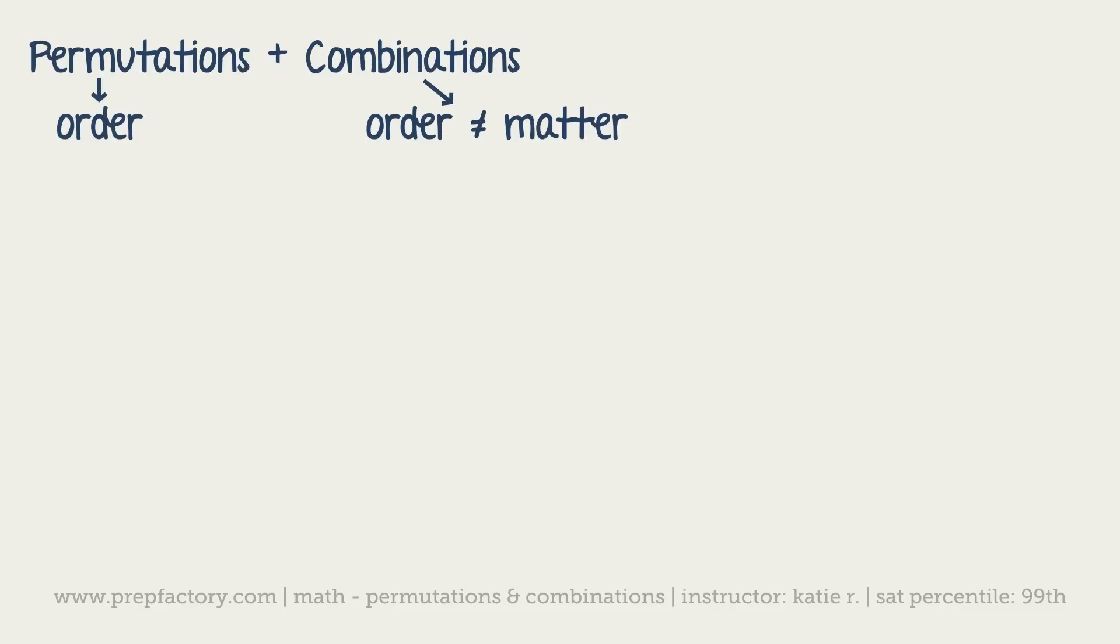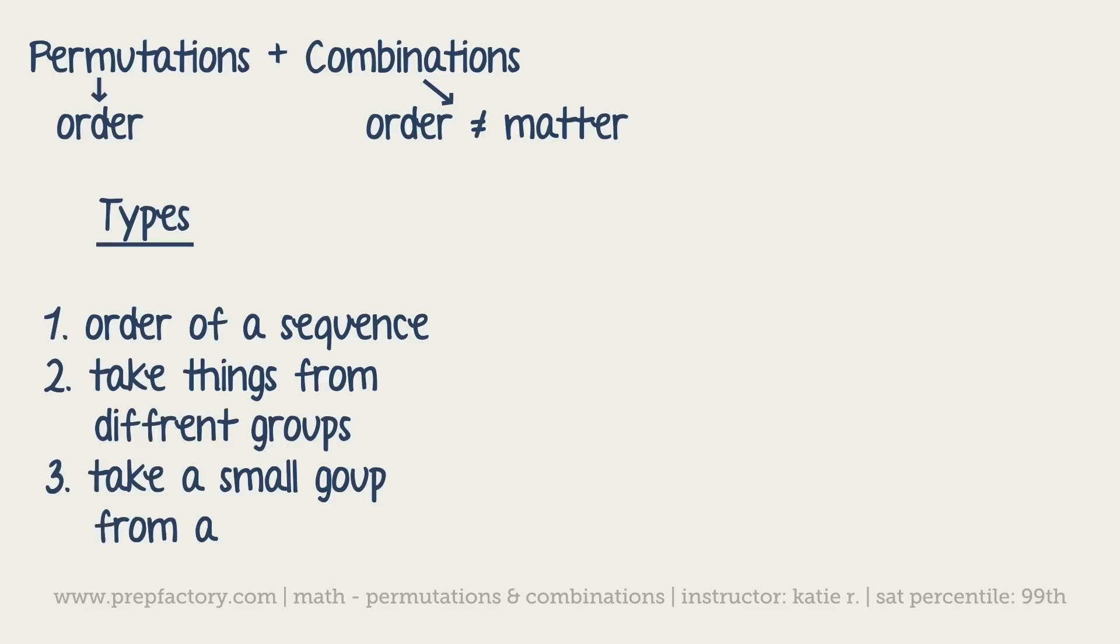Combinations would be like how many different groups of two people can you make from a group of six people. There are three separate types of both of these. So you can order a sequence of things.